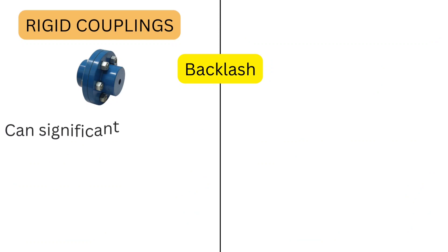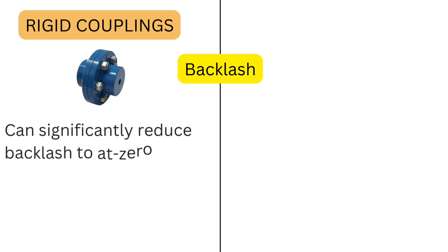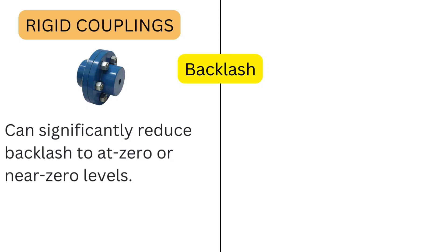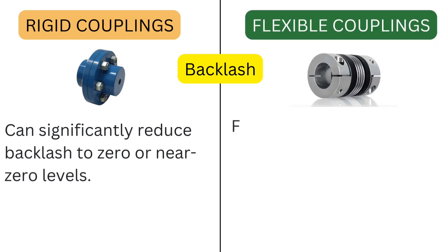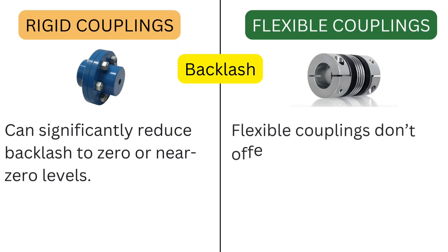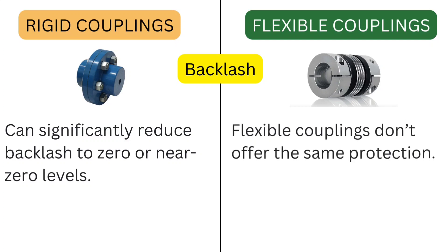Comparing backlash: Rigid couplings can significantly reduce backlash to zero or near-zero levels. Flexible couplings don't offer the same level of backlash protection.